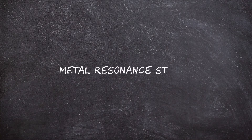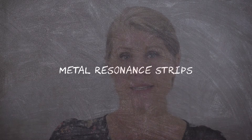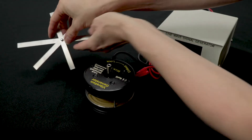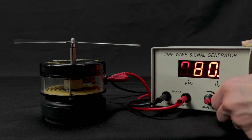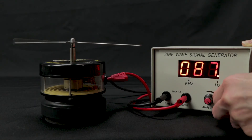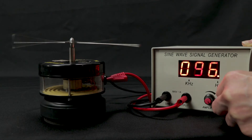Another accessory to the sine wave generator are the metal resonance strips. These help students understand the relationship between the length of an object and its fundamental frequency. Each of the strips are a different length and therefore will resonate at a different frequency. Begin by turning the generator to the lowest possible frequency. Slowly increase frequency until you see the longest strip begin to vibrate. Continue increasing the frequency and the longest strip will stop resonating and the next longest strip will begin.